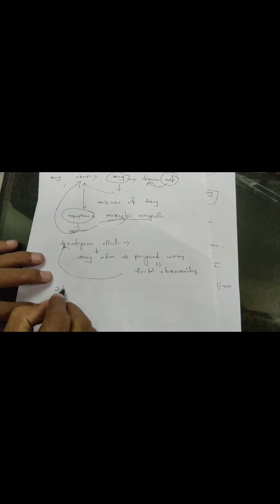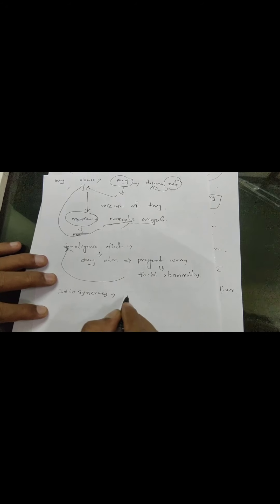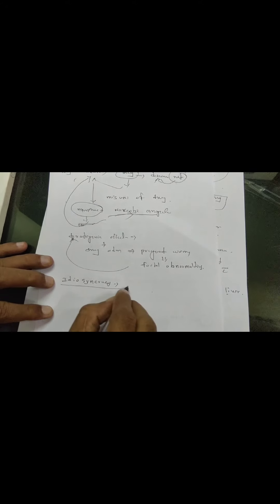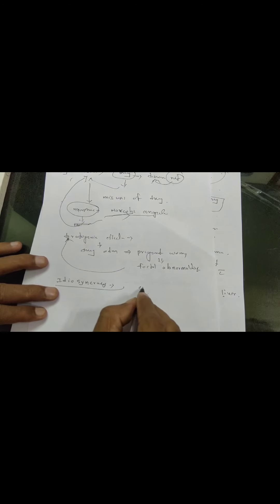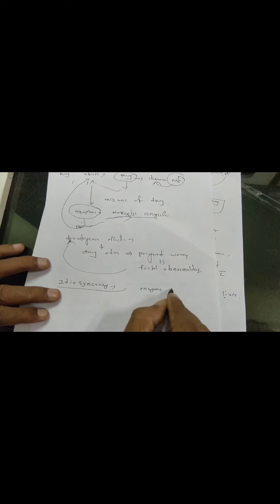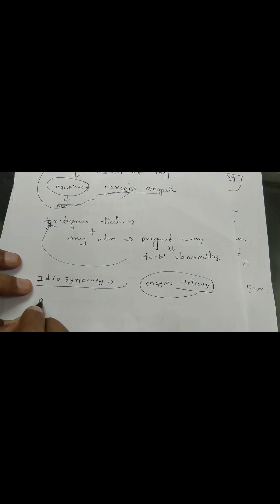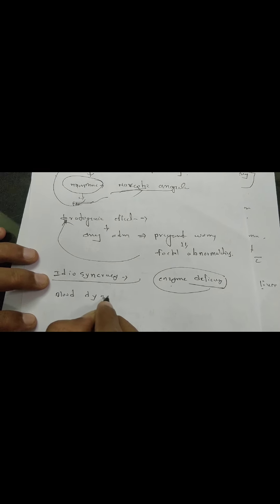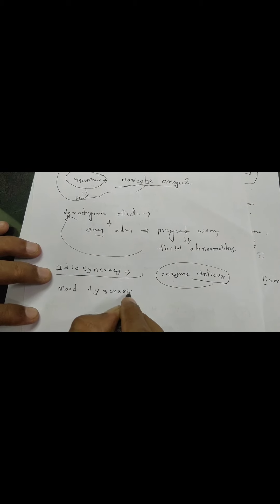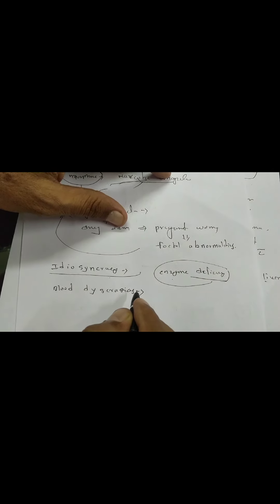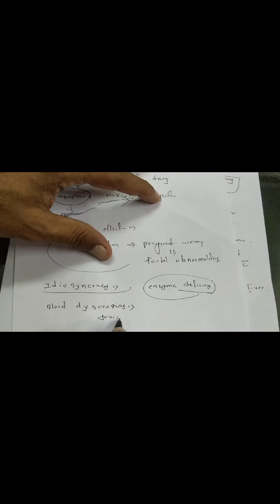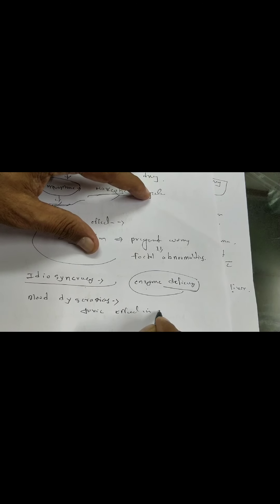Another adverse effect is idiosyncrasy — an unwanted drug reaction due to abnormal individual susceptibility. It may occur due to enzyme deficiency. This idiosyncrasy can also manifest as blood dyscrasias, mainly due to toxic effects on bone marrow.